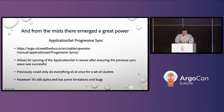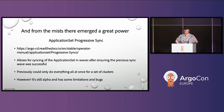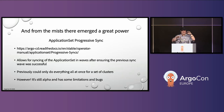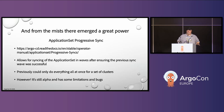Coming out of the Argo world, there's evolved the application set progressive syncs — this is really cool. Previously with application sets, if you had a large number of clusters and wanted to go to some first then others, you'd need different generators and multiple PR commits to progressively roll through environments. Now application set with progressive sync does that automatically. Keep in mind it is still alpha and there are some limitations.